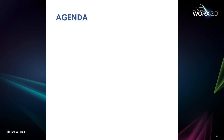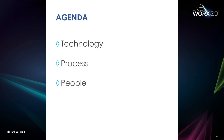Here's the agenda for this discussion. First, I'll discuss different aspects of the technology necessary for implementation. Next, I'll talk about the processes you will need to define. Third — the most important aspect — people. Fourth, I'll discuss the learning system you should implement that crosses over people, process, and technology. And finally, I'll cover the three takeaways from this talk.